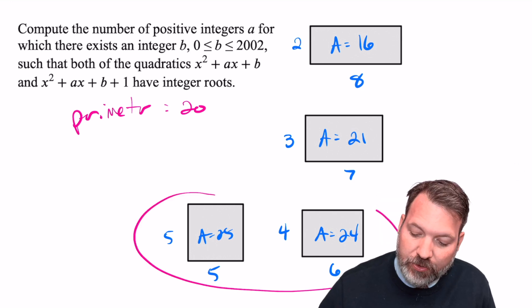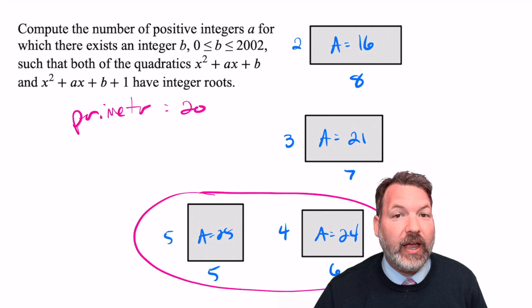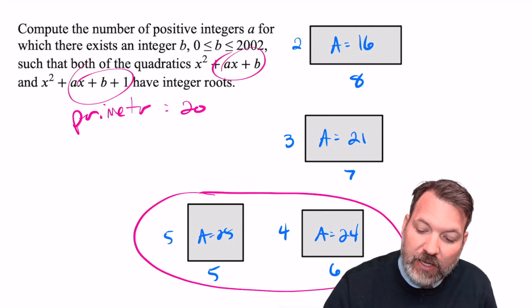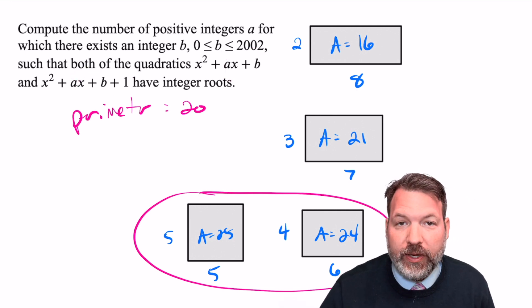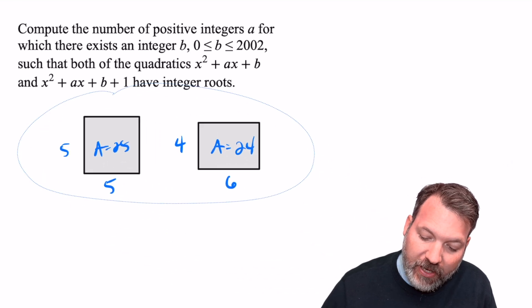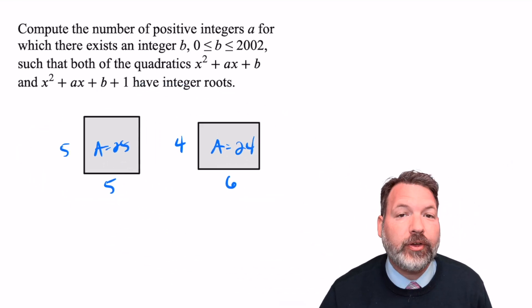The fact that these last two rectangles have the same perimeter but areas that are one apart is really the key to answering this particular question, because it's possible to represent each one of these rectangles as a particular polynomial.